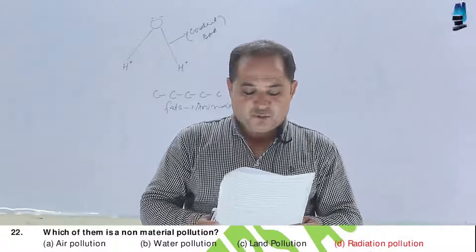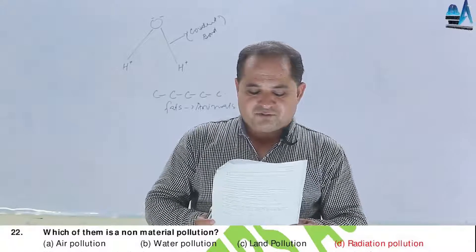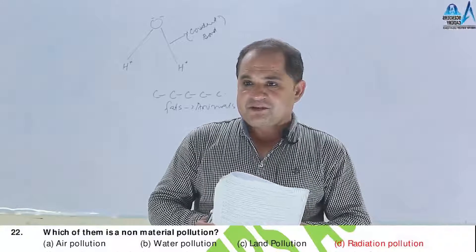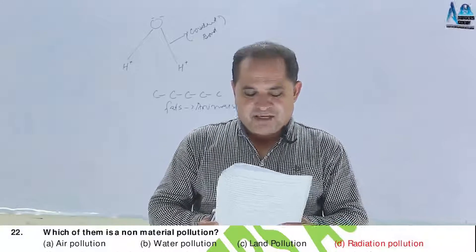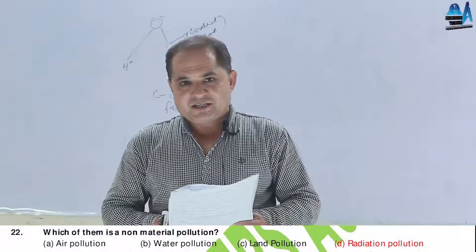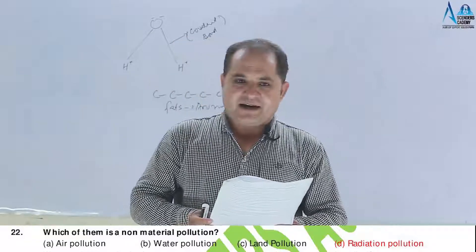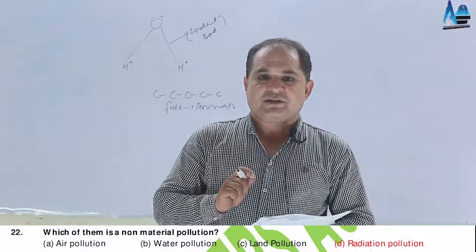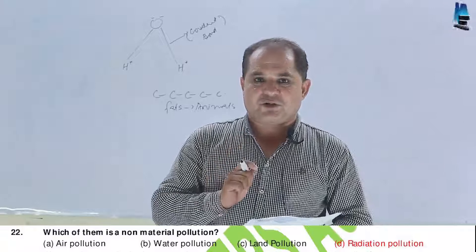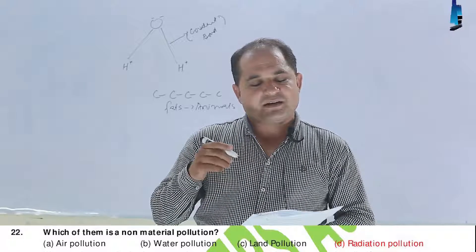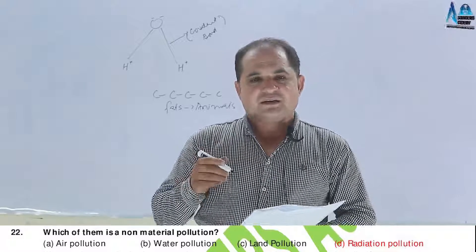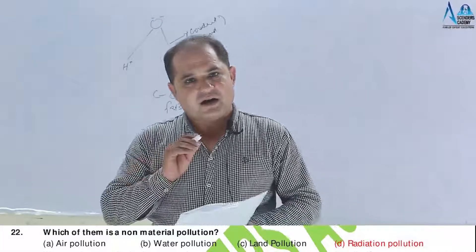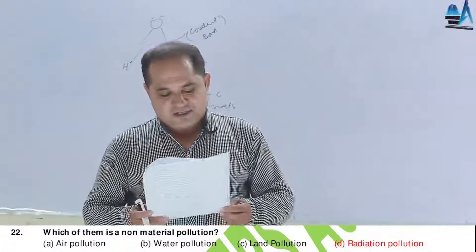Question number 22. Which one is a non-material pollution? A, air; B, water; C, land; D, radiational pollution. Radiational pollution is non-material pollution — it is due to radiation such as alpha, beta, gamma rays, and X-rays.